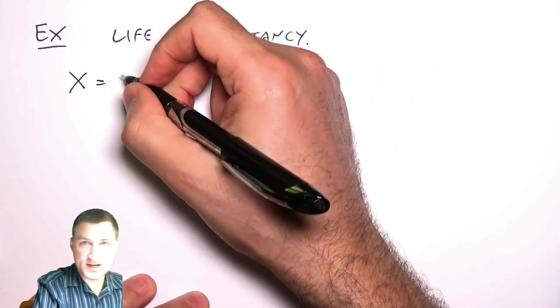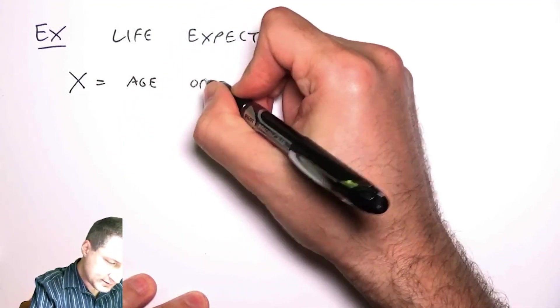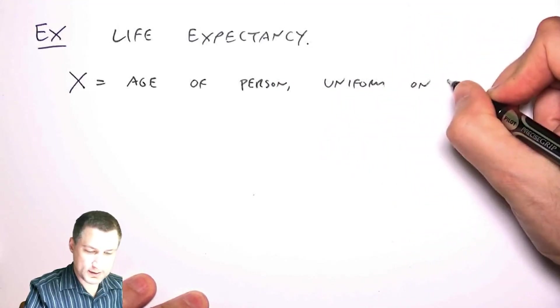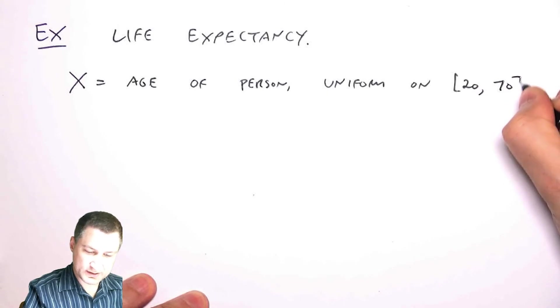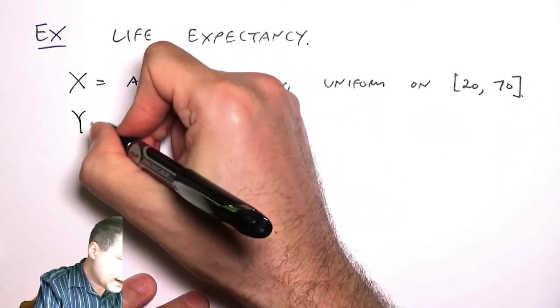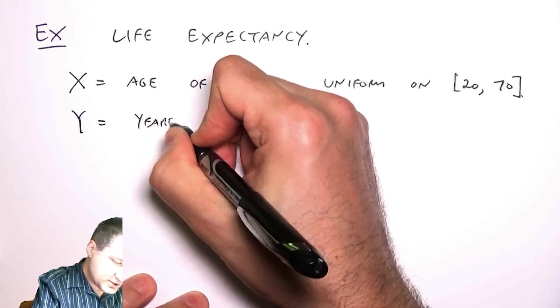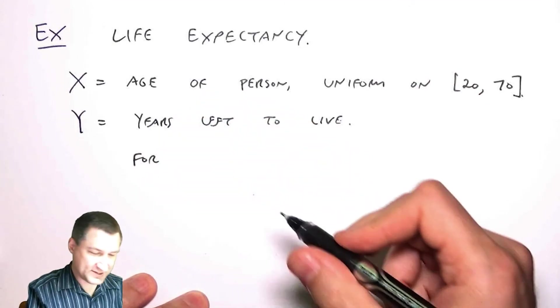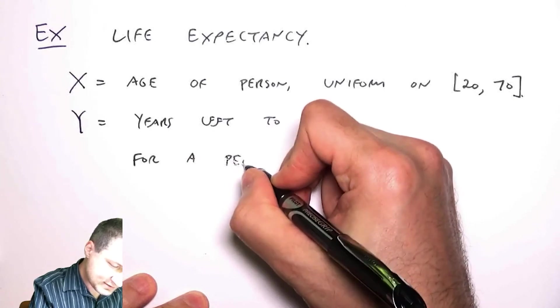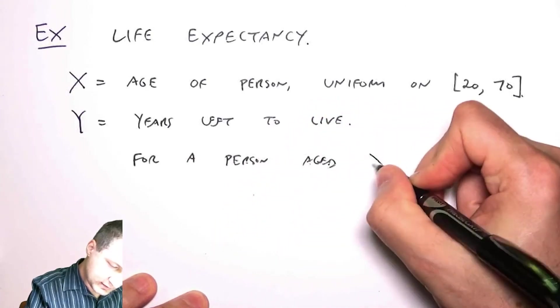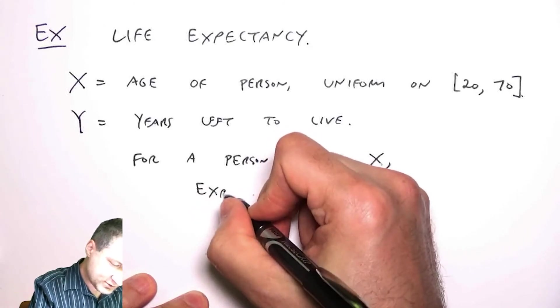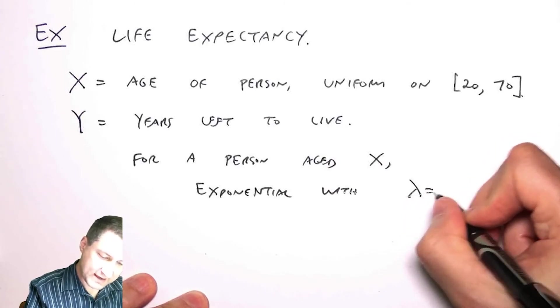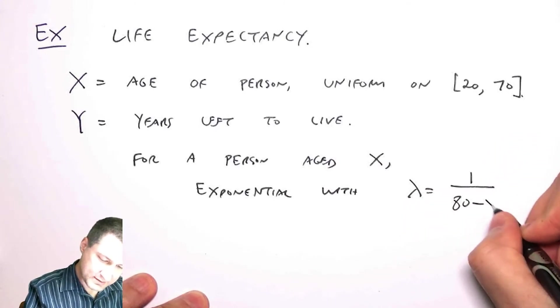So let's suppose that X is the age of a randomly selected person, and let's suppose that that value is uniform on the range 20 years old to 70 years old. And let's let Y equal the years left to live, which we're going to specify as a conditional. So for a person of age X, that number is exponential with parameter lambda 1 over 80 minus X.